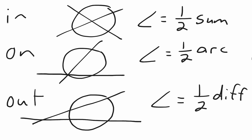When tangents and secants intersect a circle, they could intersect inside the circle, on the circle, or outside of the circle. When they intersect inside the circle, to find the angle formed, you take the arc that the angle opens up to and the arc on the other side, and take half of the sum of those arcs.